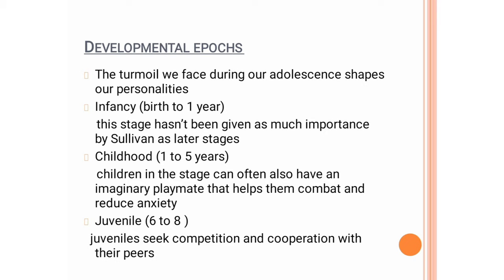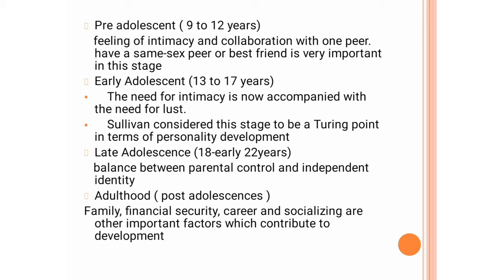The juvenile stage is six to eight years, characterized by competition and cooperation with peers. Next is pre-adolescence — nine to twelve years — involving feelings of intimacy and collaboration with one peer, typically a same-sex best friend, which is very important at this stage. Early adolescence is thirteen to seventeen years, where the need for intimacy is now accompanied by the need for lust. Sullivan considered this stage to be a turning point in terms of personality development.